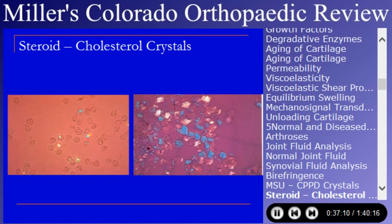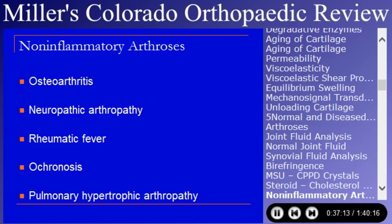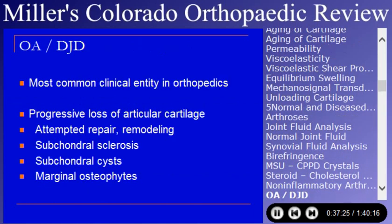The non-inflammatory arthroses include osteoarthritis, neuropathic arthropathies, rheumatic fever, ochronosis, and pulmonary hypertrophic osteoarthropathy. Osteoarthritis, or degenerative joint disease, is the single most common clinical entity in orthopedics. There is progressive loss of articular cartilage. Pathologically, you see an attempt at repair and remodeling, subchondral sclerosis and cysts, and marginal osteophytes.